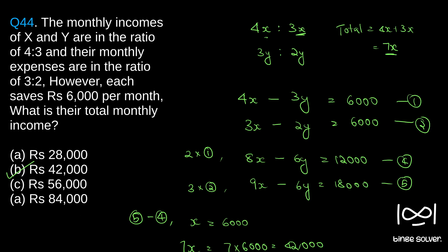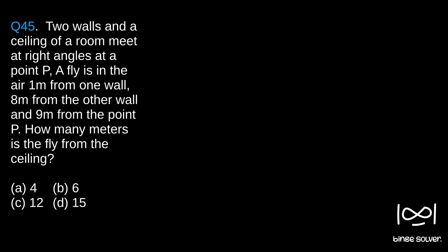Question 45: Two walls and a ceiling of a room meet at right angles at point P. A fly is in the air one meter from one wall, eight meters from the other wall, and nine meters from the point P. How many meters is the fly from the ceiling?